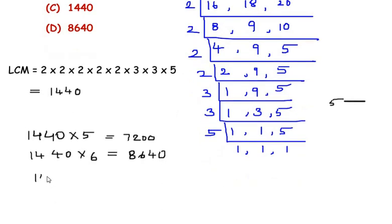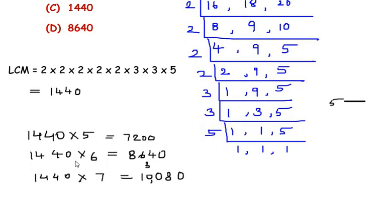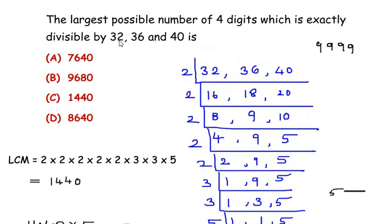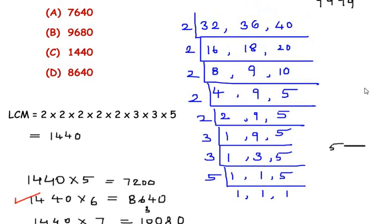Let us find out 1440 times 7. So here we get 0 and 8, and 7 times 4 is 28, and 2 was the carry. 7 times 1 is 7 plus 3 gives us 10,080, which has exceeded our limit of four digits. So the value that is the largest possible number which is divisible by all these three numbers - 32, 36, and 40 - is going to be 8640. So here we choose the option D. This is our answer.